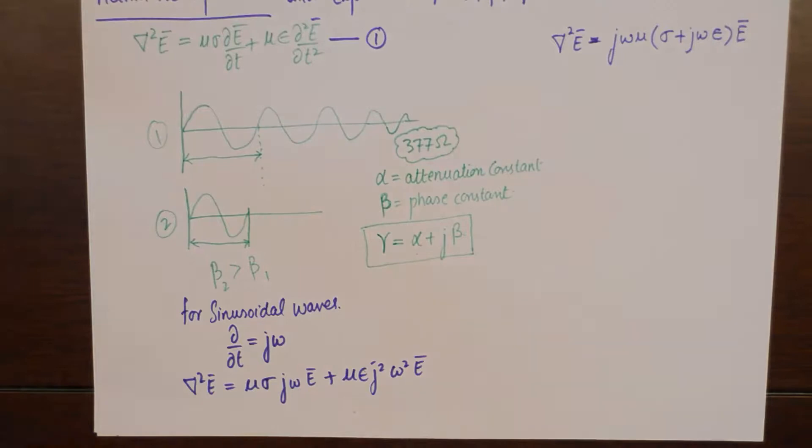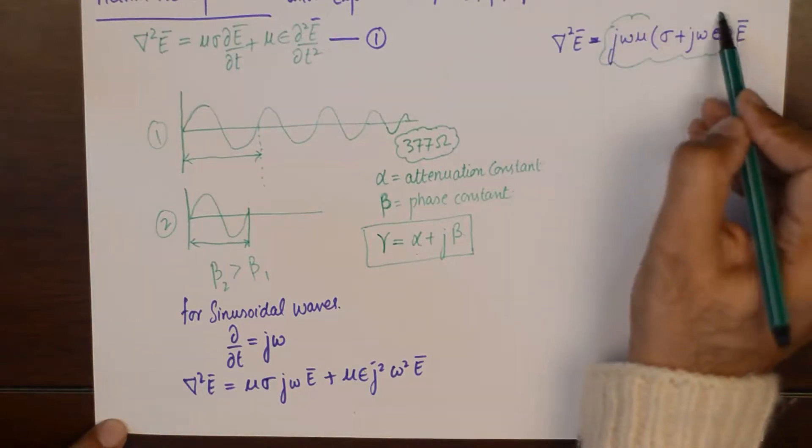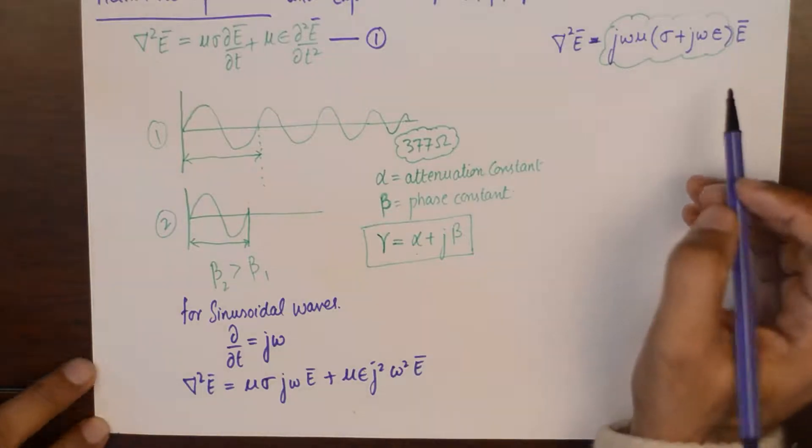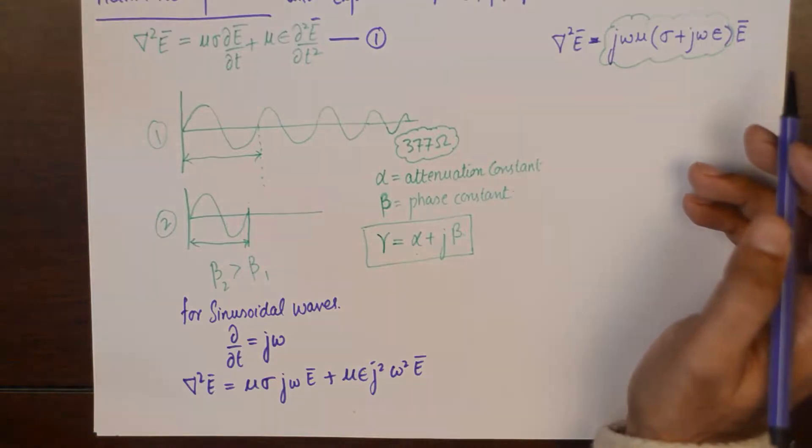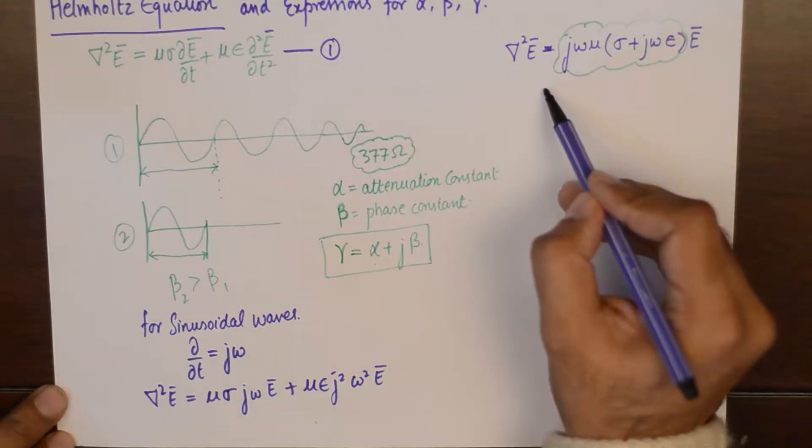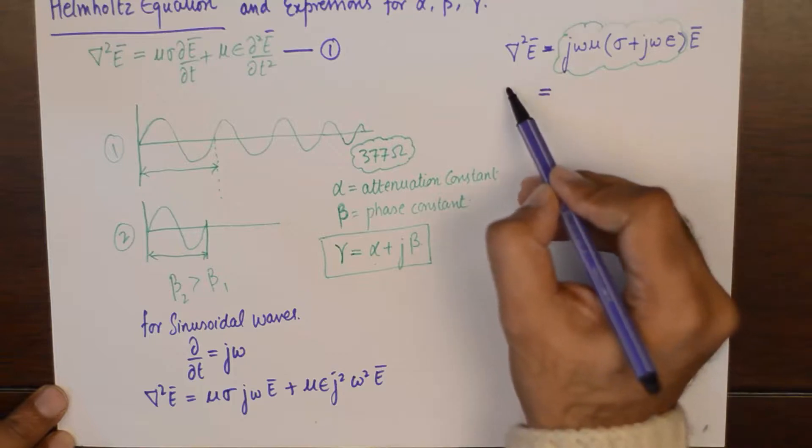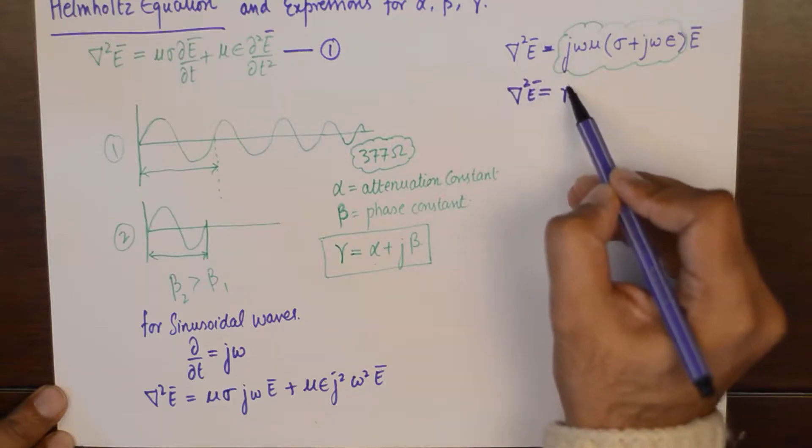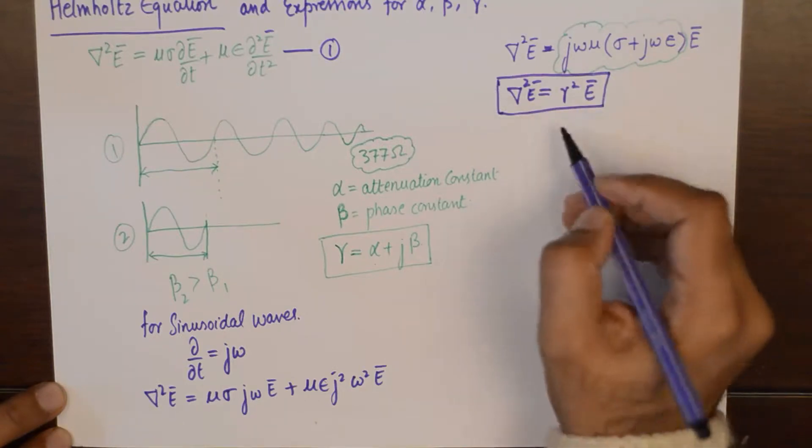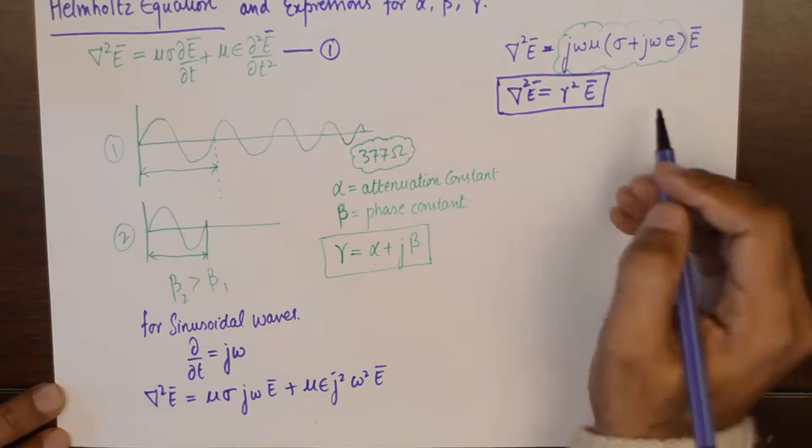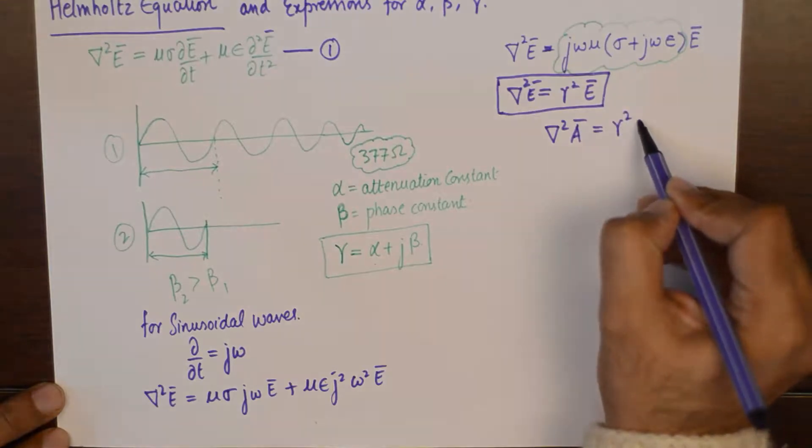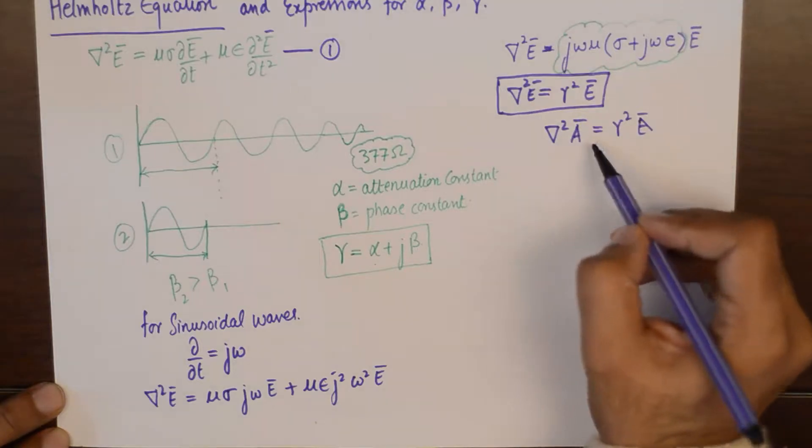Now, this term here with the vector E on the right hand side is a little too cumbersome to understand, and it does not straight away give us the desired values for alpha and beta. So what Helmholtz proposed is that this term be substituted by gamma squared E. So now the wave equation has taken up a very compact format. Any wave equation in its most generalized form can be represented by Laplacian of A on the left hand side and gamma squared A on the right hand side.